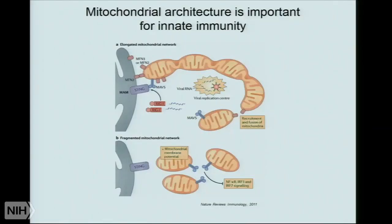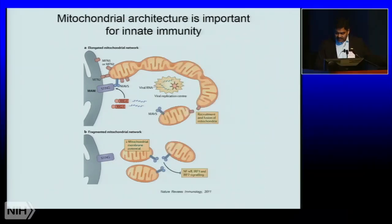The antiviral immunity from mitochondria is very essential. When the mitochondria are elongated structures, they are capable of mounting antiviral immunity very efficiently. When the mitochondria are fragmented bean-like structures, the antiviral immunity from mitochondria is decreased. This is very important for understanding why viruses target mitochondria — because they want to survive inside the cell and don't want the cell to produce antiviral immunity. For HHV6, this is unique because we found that HHV6 induces mitochondrial fragmentation specifically to stop the antiviral immunity.